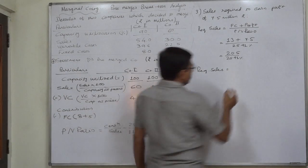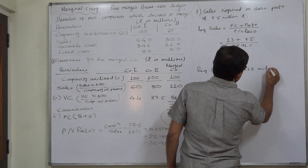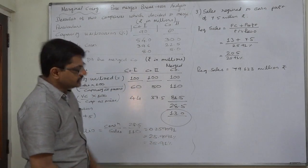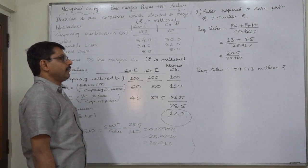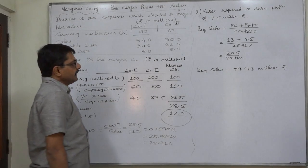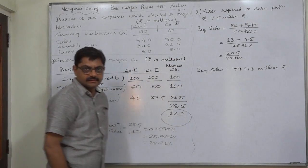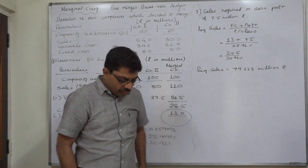That means only if the merged company makes sales worth 79.123 million rupees, it can earn profit of 7.5 million rupees. In the next lecture we are going to calculate required increase in selling price.